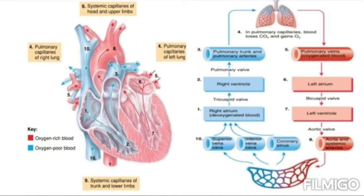The freshly oxygenated blood then flows into the pulmonary veins and returns to the left atrium. By this we can say that the left side of the heart pumps oxygenated blood into the systemic circulation to all the tissues of the body, except the alveoli of the lungs, where the right side of the heart pumps deoxygenated blood into the pulmonary circulation to the air sacs of the lungs.